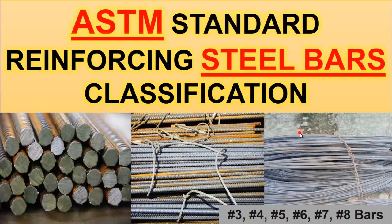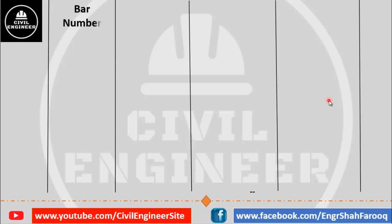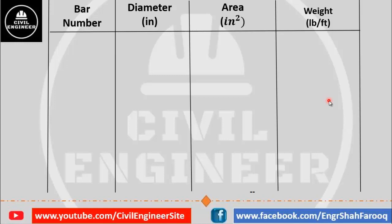Watch the video in full and do not forget to like it. Today I have discussed ASTM classification of steel bars in tabular form. According to this table, the first column is bar number, the second column is diameter of bar in inches, the third column is cross-sectional area of bar in square inches, and the last column is weight of bar in pounds per foot.